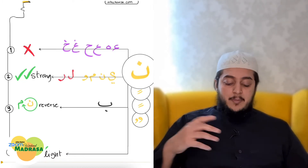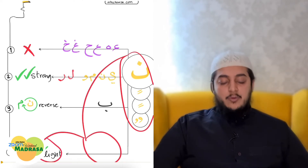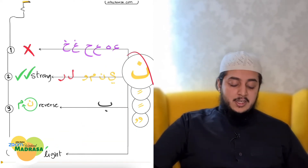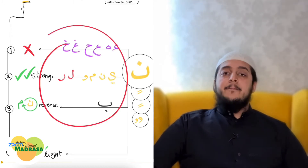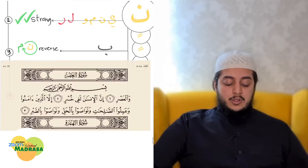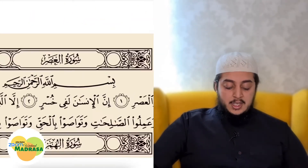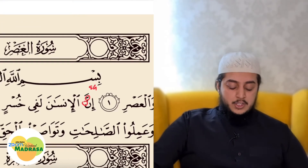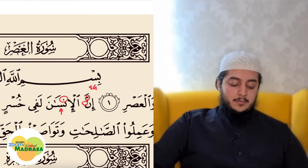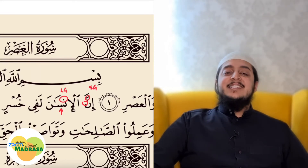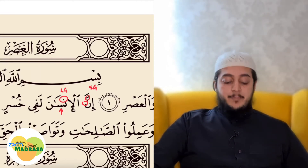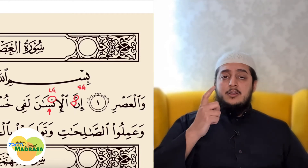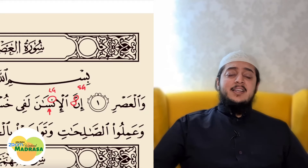So what letters, if they come after noon and tanween, require a light ghunna? The answer is all the rest of the letters apart from the ones that you see above. Very easy and very simple. We have an example here in Surat Al-Asr. Look at this - "in" - that's a noon coming after noon, so that's a strong ghunna. But look at this one: we have a noon and after the noon we have seen - that's a light ghunna.